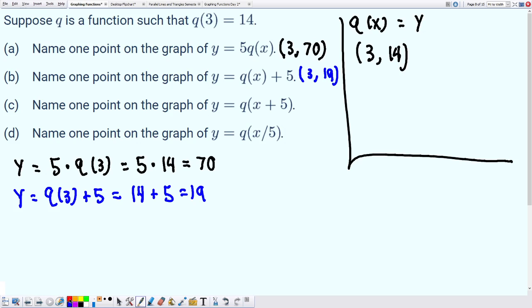All right. For the next one, we have y equals q of x plus 5. Now what this is really asking us is that we want the appropriate x value so that we will return to this q of 3.